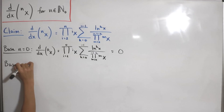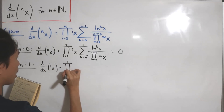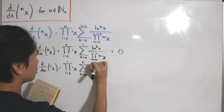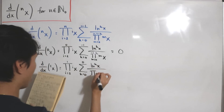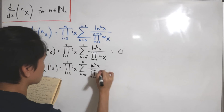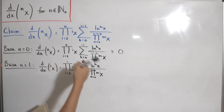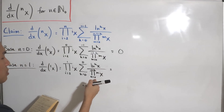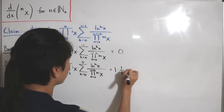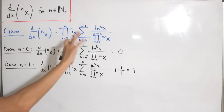For base case n=1: the partial product from i=2 to 1 is again an empty product equal to 1. The sum from k=0 to 0 evaluates at k=0, giving ln⁰(x) = 1. The inner partial product from m=0 to −1 is also an empty product equal to 1. So the formula yields 1 · (1/1) = 1, which matches the known derivative of the first tetration.